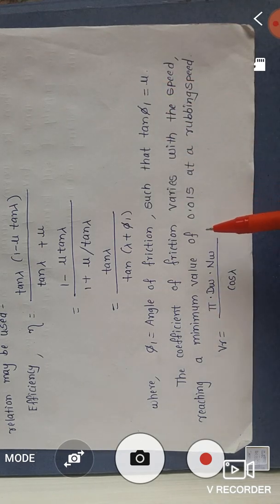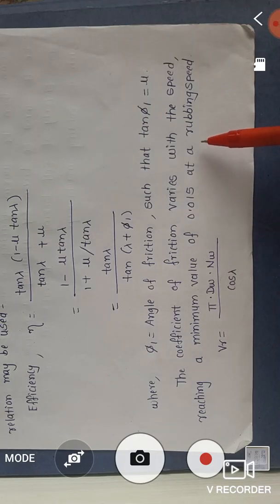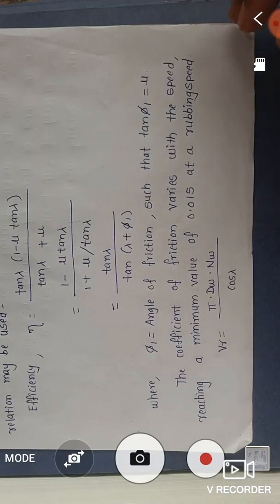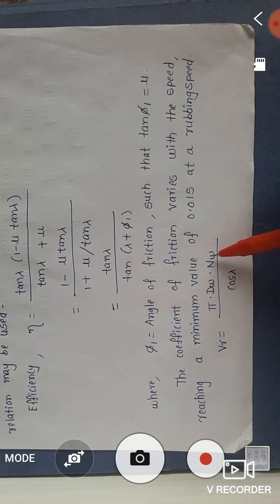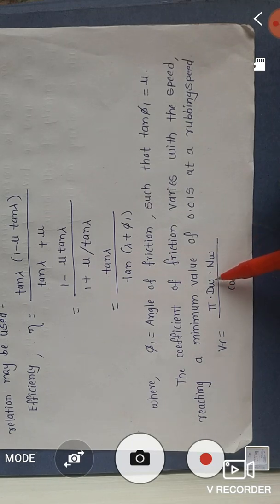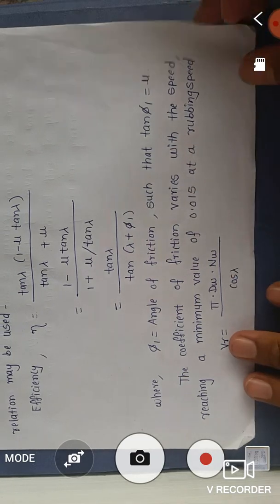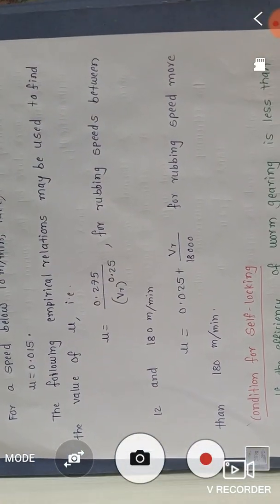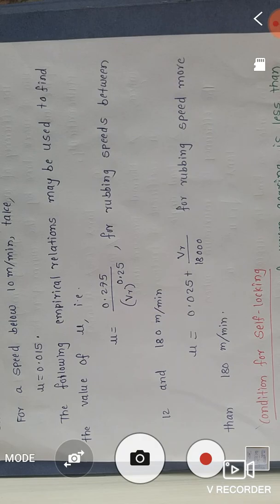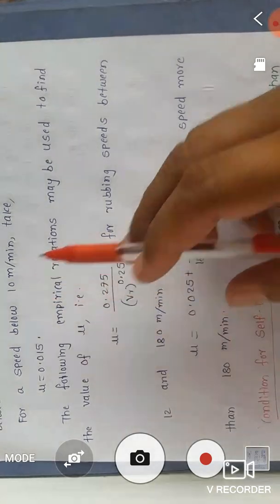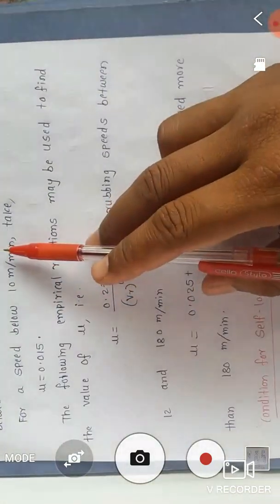The coefficient of friction varies with speed, reaching a minimum value of 0.015 at a rubbing speed vr = (π · dw · nw) / cos λ, where dw is the pitch circle diameter of the worm, nw is the speed of the worm, and λ is the lead angle. This applies when vr is between 100 to 165 meters per minute.